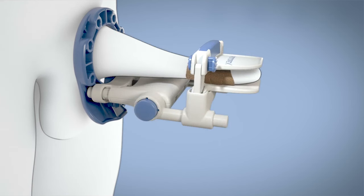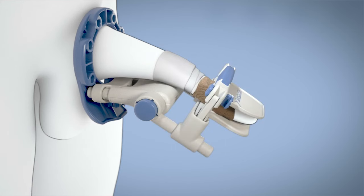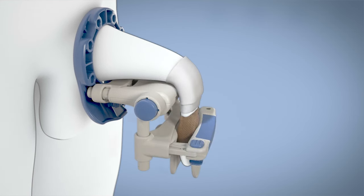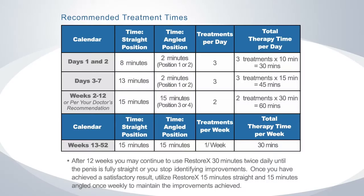Many men have found that wrapping the shaft of the penis with tissue or gauze allows for the penile skin to slide on Restorex, making it easier and more comfortable to achieve the third stop.